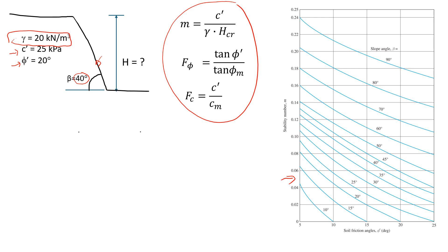In the first example, we're going to estimate the critical value of h at which the slope is still stable. And in the second example, we're going to assume some h and estimate the safety factor. So let's start with the first example.